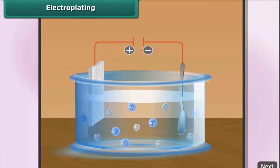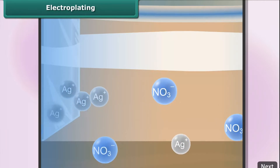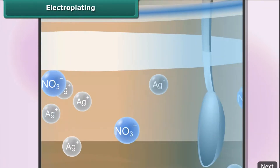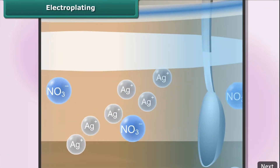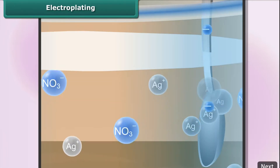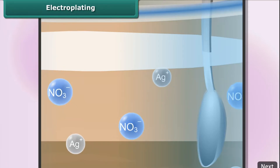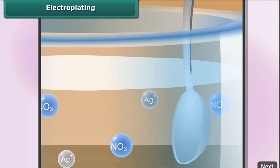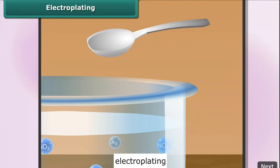As soon as electric current starts flowing through the solution, electrons begin to escape from the silver anode. This results in the formation of positively charged ions which separate from the anode and pass into the solution. There, they migrate towards the cathode, attracted by its negative charge. When they reach the cathode, they accept electrons from it and change into silver atoms, which deposit onto the cathode in the form of a thin metallic layer. The thickness of the layer depends on the conditions under which the electrolysis is conducted.